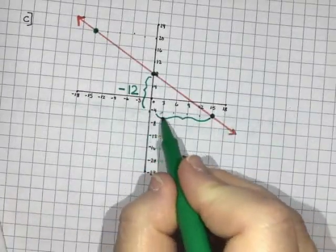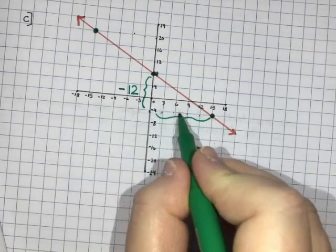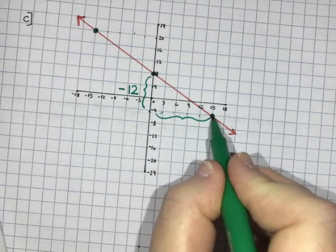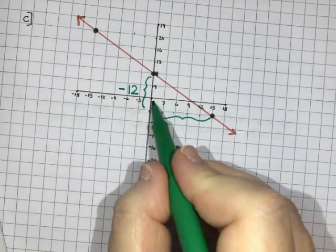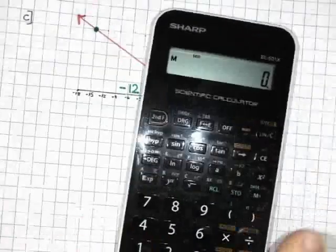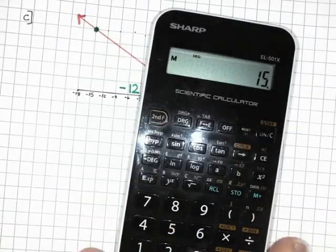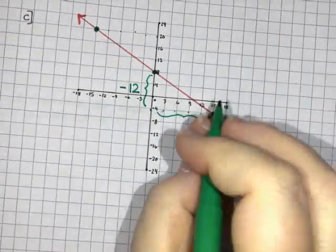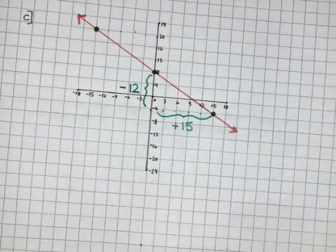On the x part we've gone 1, 2, 3, 4, 5 squares over. Every square here is worth 3 so 5 times 3 is 15. We've added 15 onto our x.